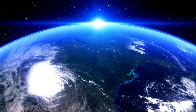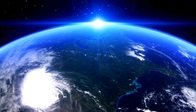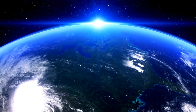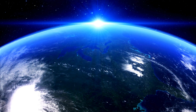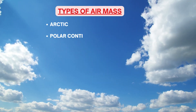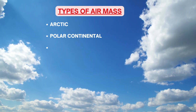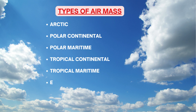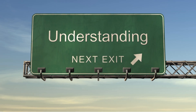Depending on hot or cold belt or land or sea surface below, air masses are classified in six categories: Arctic, polar continental, polar maritime, tropical continental, tropical maritime, and equatorial maritime. So with this quick recap of air masses, we are ready for the topic front.